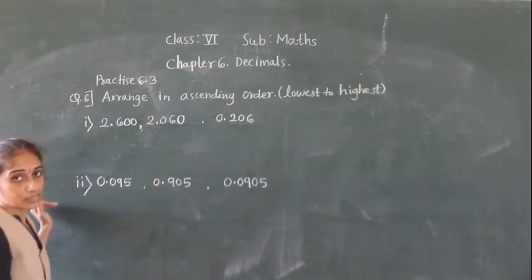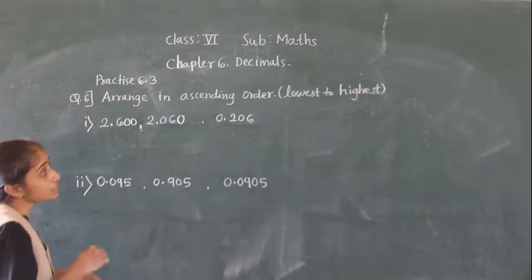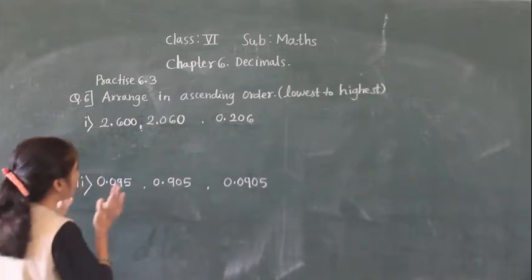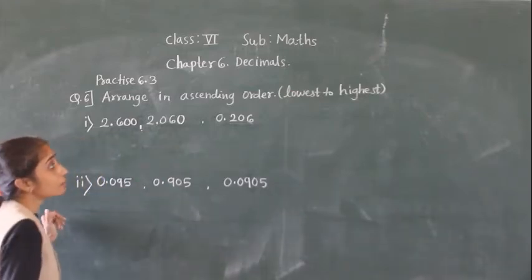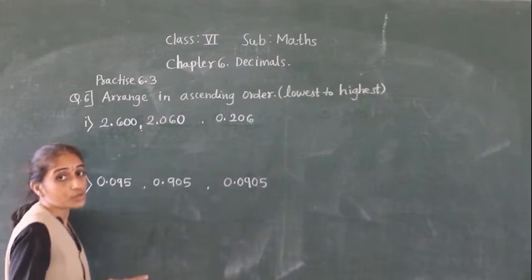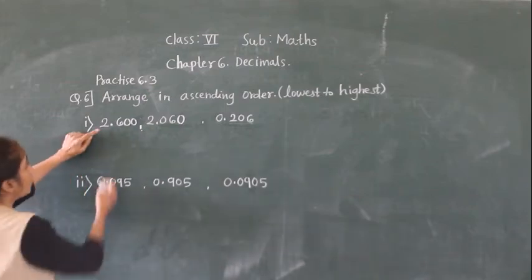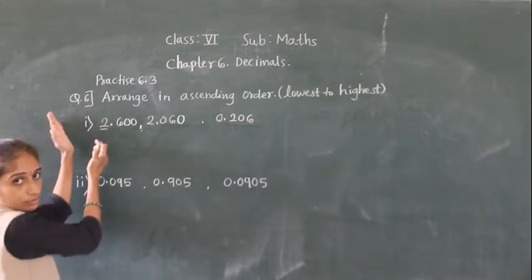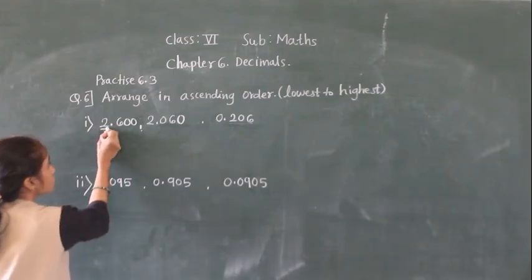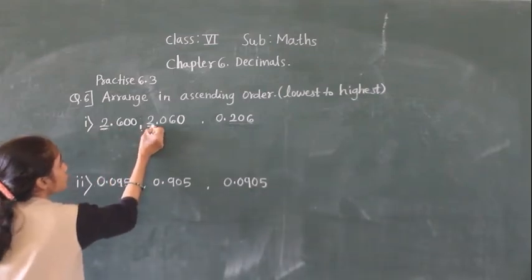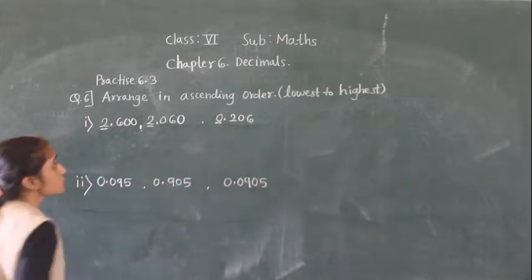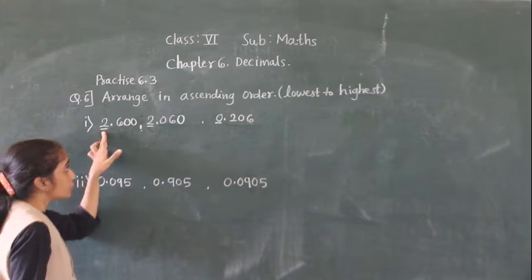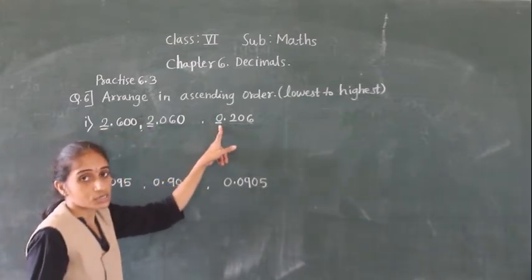Now we have to compare these numbers and arrange them from small to big. First we compare the whole number part — the part before the decimal point. Here it is 2, here it is 2, but here it is 0.